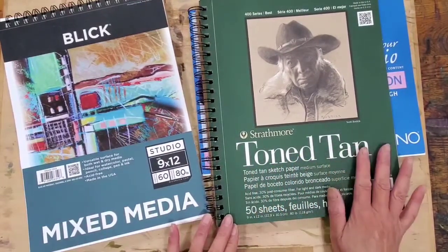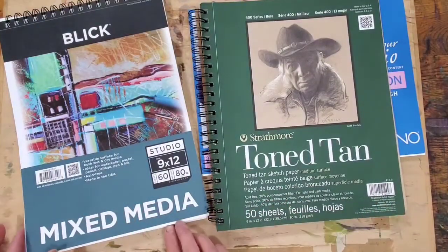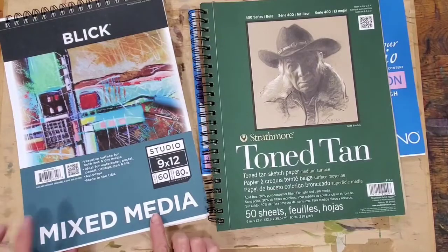What I use are some toned paper, some they call toned tan and some called toned gray, which simply means they have a different base color. So this is the gray version and this is a tan version.